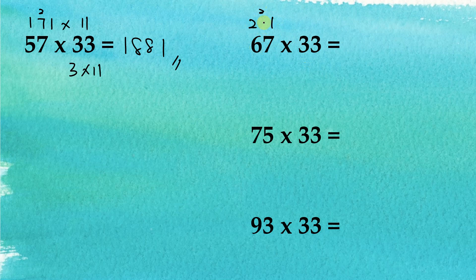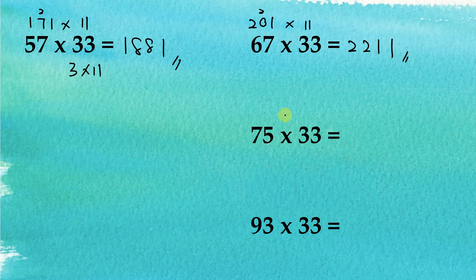For 67 multiplied by 3: 3 times 7 is 21, and 3 times 6 is 18, plus 2 is 20. So 67 × 3 = 201. Now 201 multiplied by 11: the first digit is 2, the second digit is 2, the third digit is 1, and the last digit is 1, giving 2211.